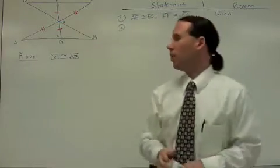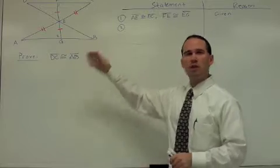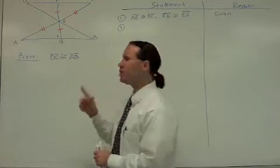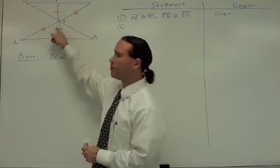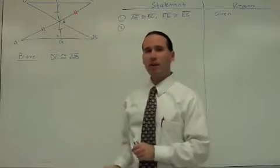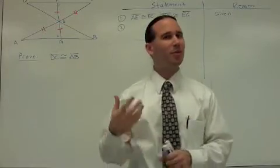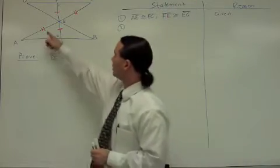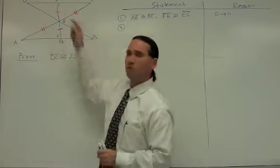Now hopefully, if you look at this picture, there should be something jumping off the page at you. I don't know if you see it, but I'm hoping that you see vertical angles right here. AEG and CEF. These angles are formed by intersecting lines, which makes them vertical angles, and as you know, vertical angles are congruent. That's great because what's that going to give us? Side, angle, side on these two triangles.